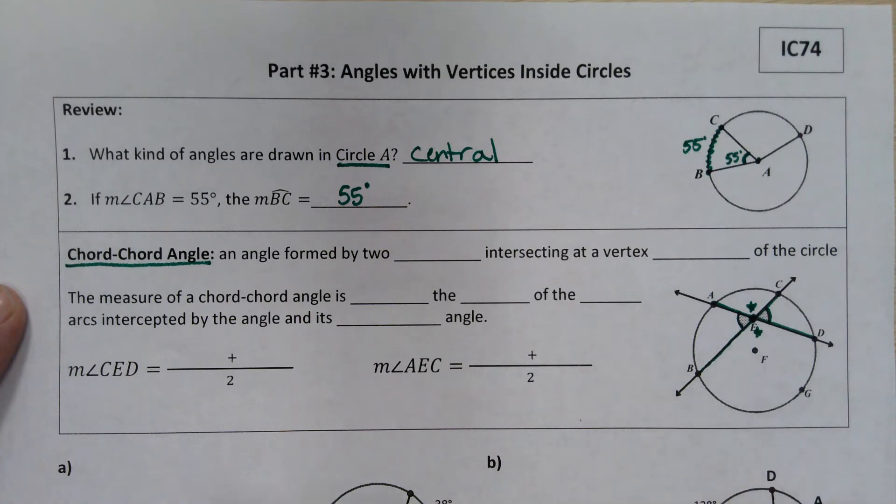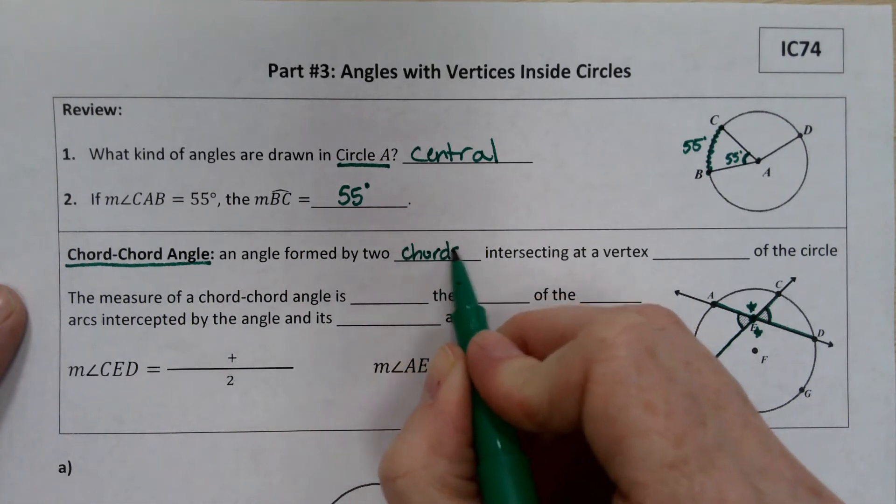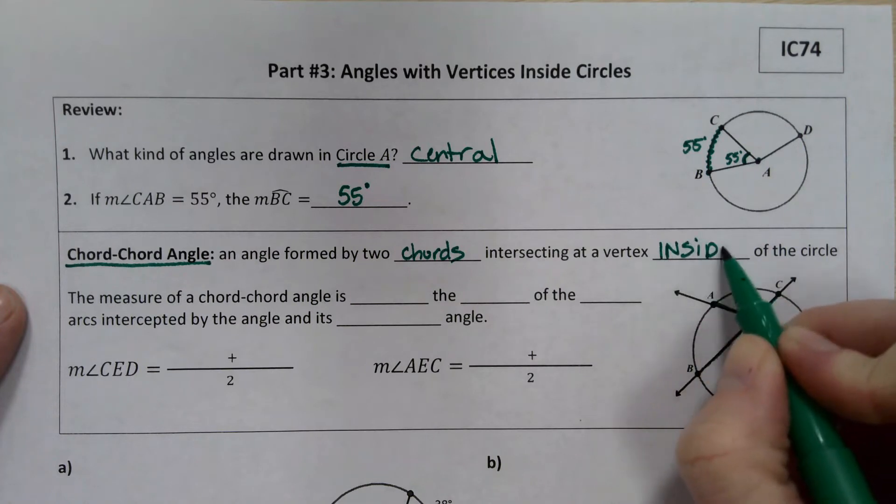And so if we're defining a chord-chord angle, it's going to be any angle that's formed by two chords intersecting at a vertex inside the circle.